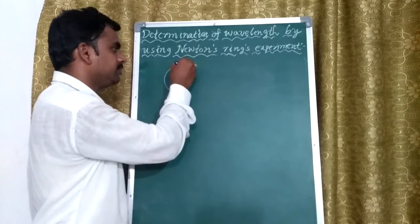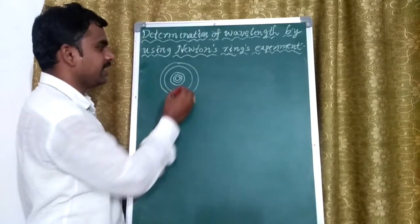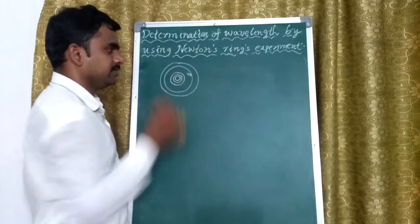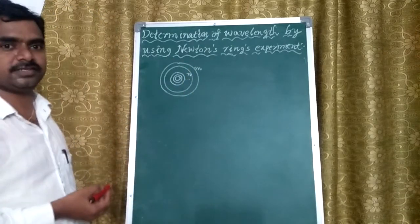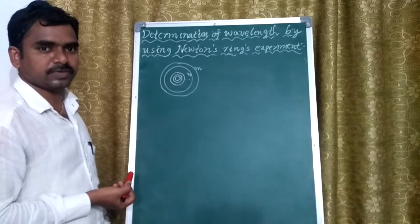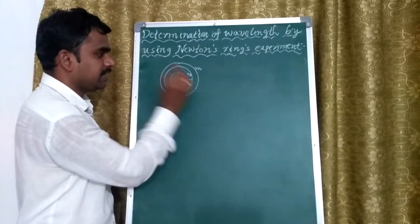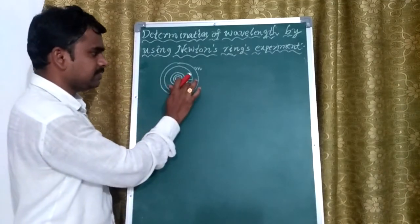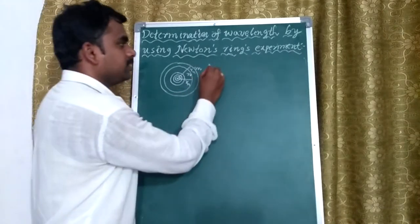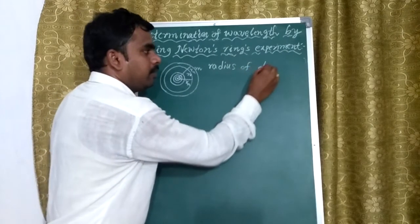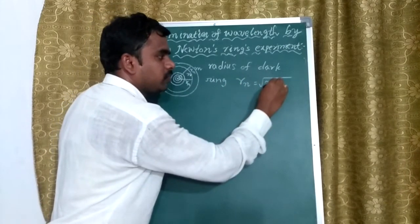For example, we have to take two rings here. For our convenience, I am taking this ring as the nth ring and this ring as the mth ring. This is the center. From the center, the radius of the nth ring can be called r subscript n, and similarly for the mth ring, it can be called r subscript m. According to our formula, the general formula for the radius of the dark ring is: r_n equals square root of n·R·λ, where n is the number of the ring, R is the radius of curvature of the given planoconvex lens, and λ is the wavelength of the source of light.